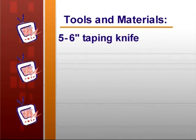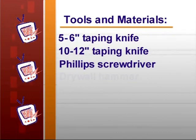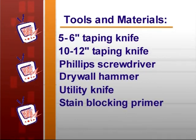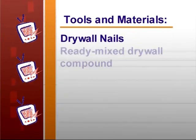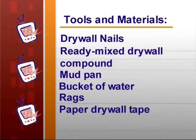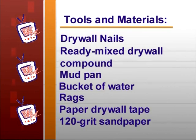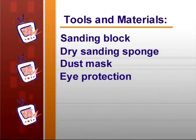The tools and materials needed to complete the project include a 5-6 inch taping knife and a 10-12 inch taping knife, preferably stainless steel, a Phillips screwdriver, a drywall hammer, a utility knife, a stain-blocking primer such as Kilz, metal corner beads, some drywall nails, ready-mix drywall joint compound, a stainless steel mud pan, a large bucket of water, some rags, paper drywall tape, 120-grit sandpaper, a sanding block, a dry sanding sponge, and a dust mask and eye protection. You'll also need a ladder unless you can comfortably reach up to ceiling height without one.